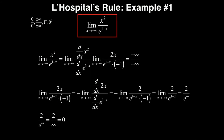Let's do one more example, and we'll finish up the other examples in another video. Two other kinds of indeterminate form we'll cover in future videos are 1 to the infinity, and something in the form 0 to the 0 power. These are also two other kinds of indeterminate forms that we can encounter.